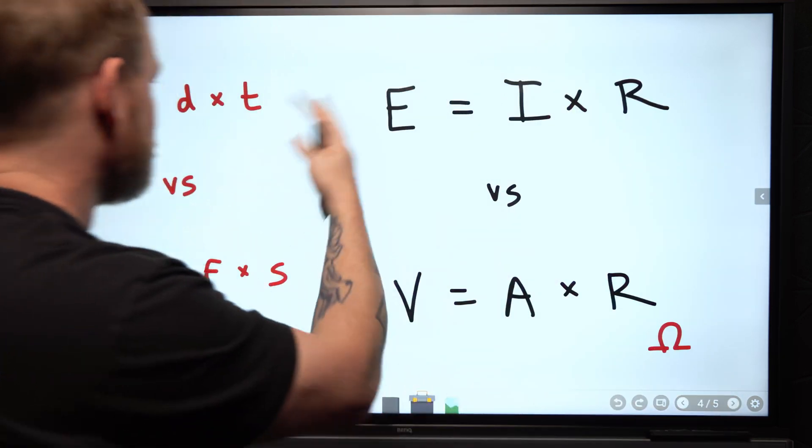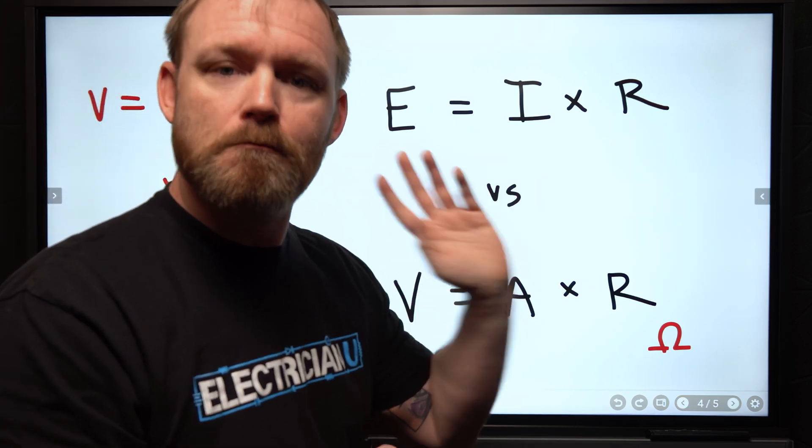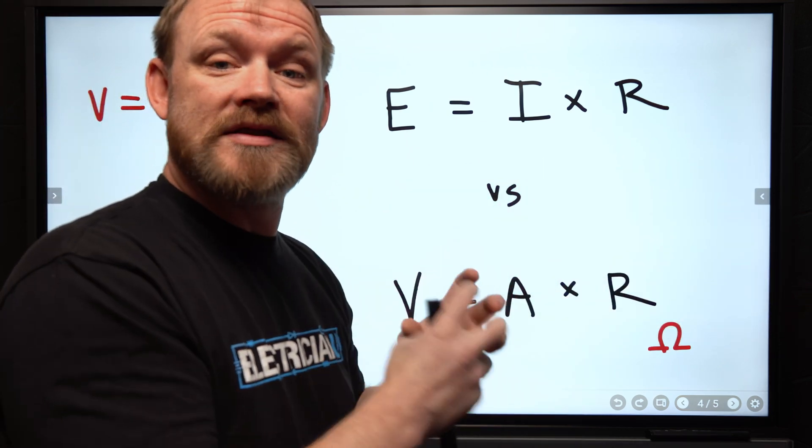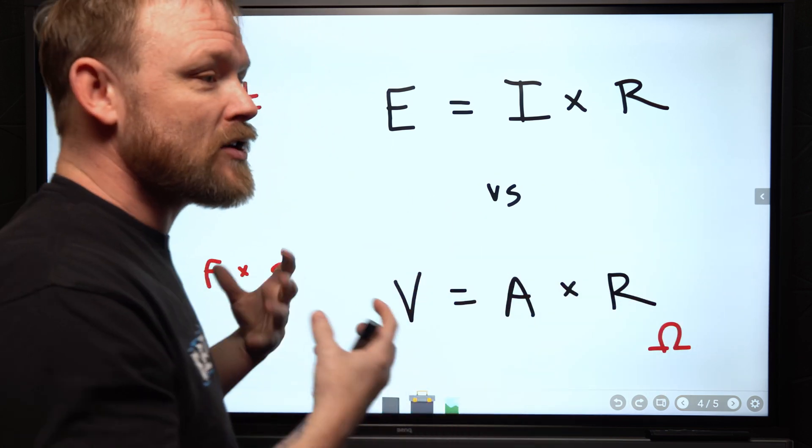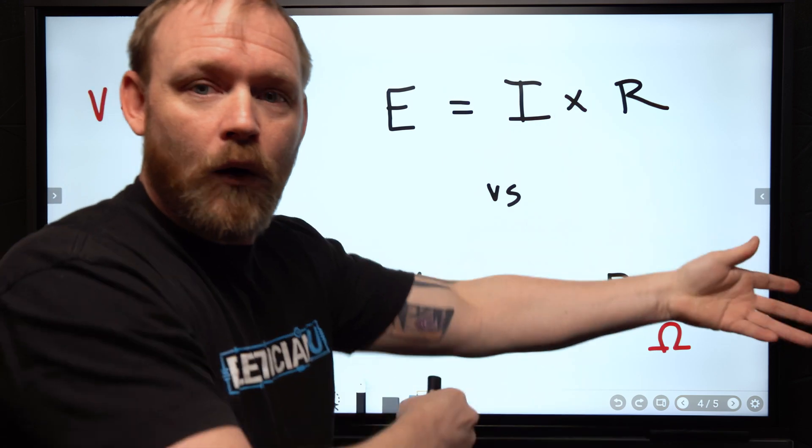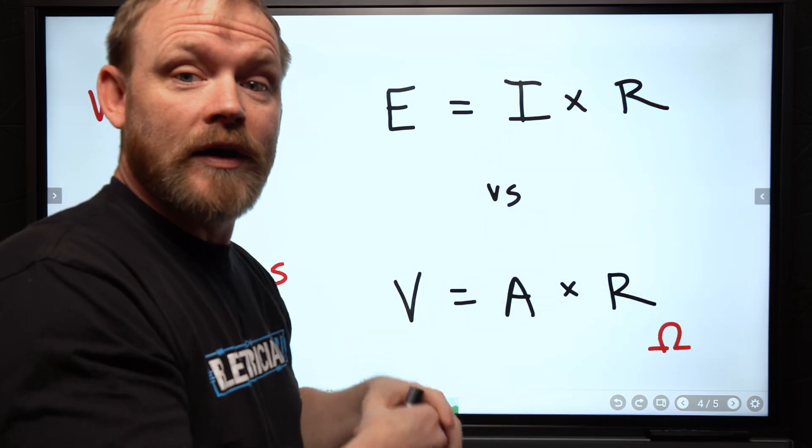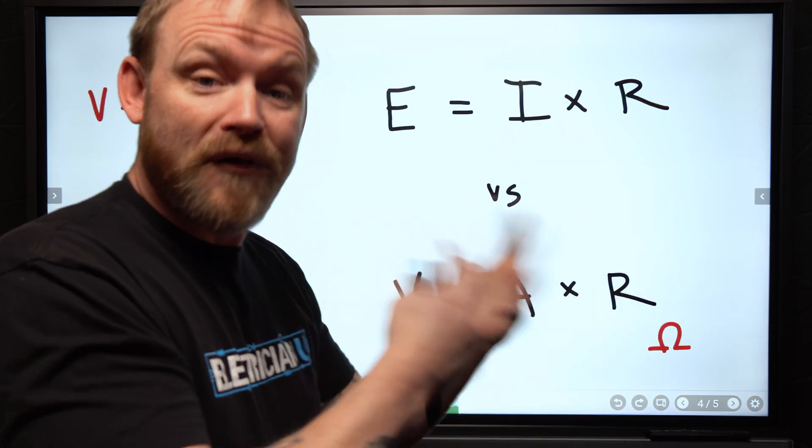And the way that I think about this is like when we say a car is going a certain miles per hour, right? Miles per hour is the measurement. It's going 60 miles an hour. But we're not actually measuring these miles per hour thingies everywhere. We're measuring velocity.